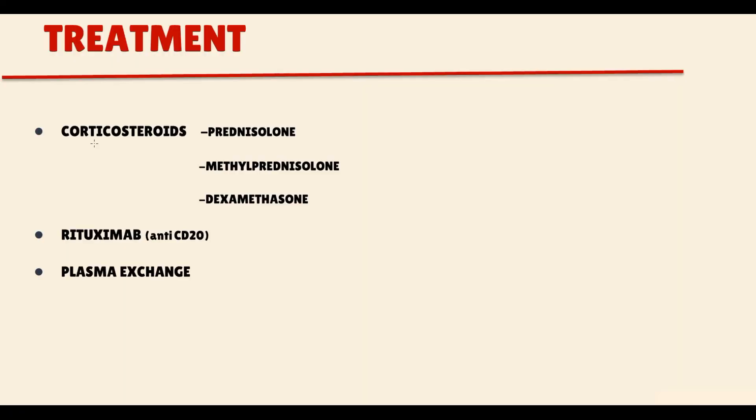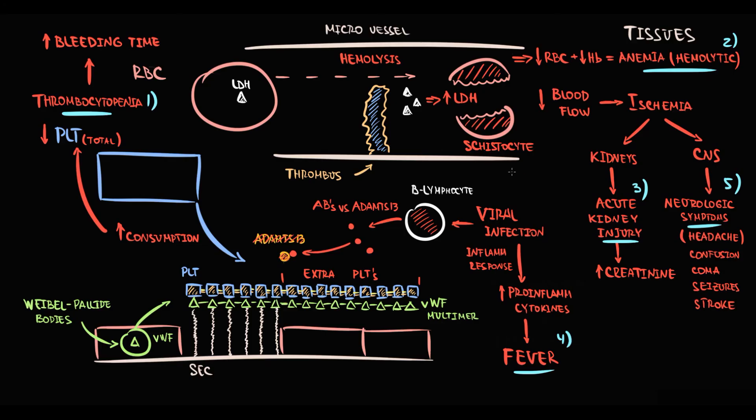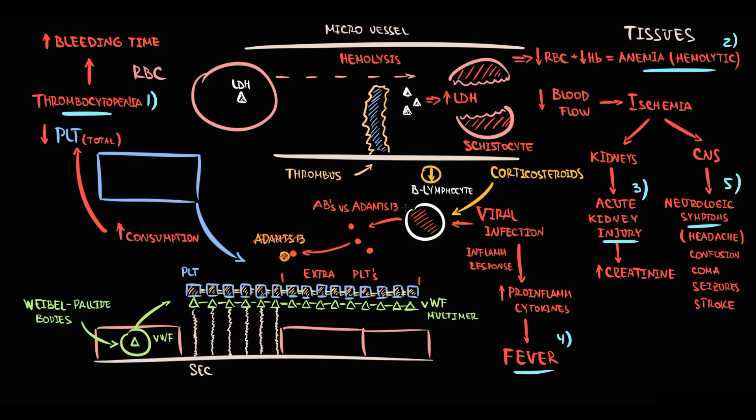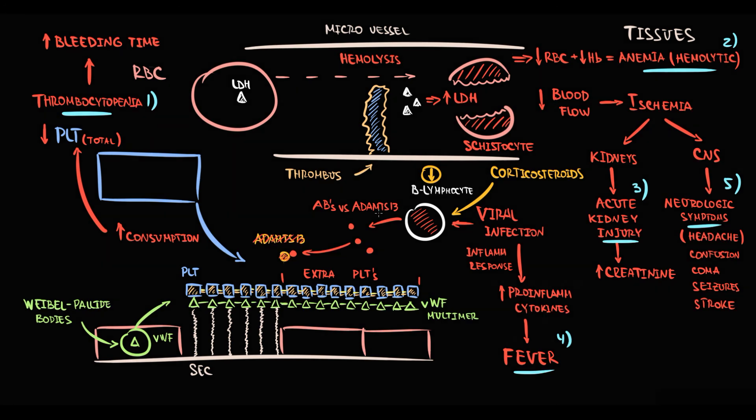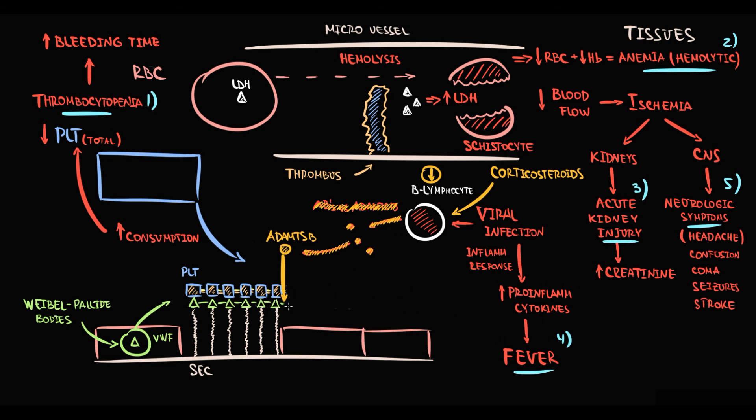The first treatment option are corticosteroids as prednisolone, methylprednisolone and dexamethasone. Corticosteroids, as we know, induce apoptosis of lymphocytes. So, when we prescribe corticosteroids, they induce apoptosis of lymphocytes, so the amount of B-lymphocytes decreases. With decreasing B-lymphocytes, autoantibodies production decreases. And the lower is the amount of immunoglobulin G against ADAMTS13, the higher is the level of this enzyme. Thereby, the lower is the possibility of massive thrombosis.